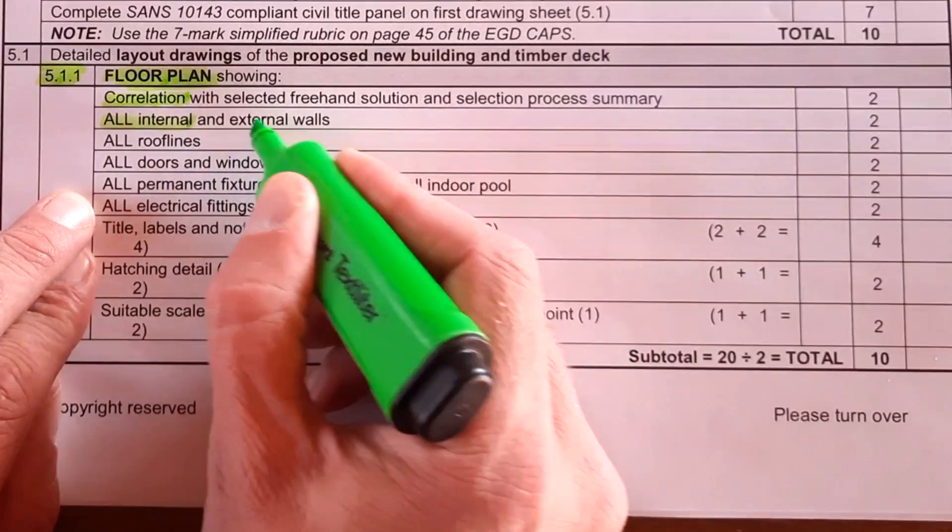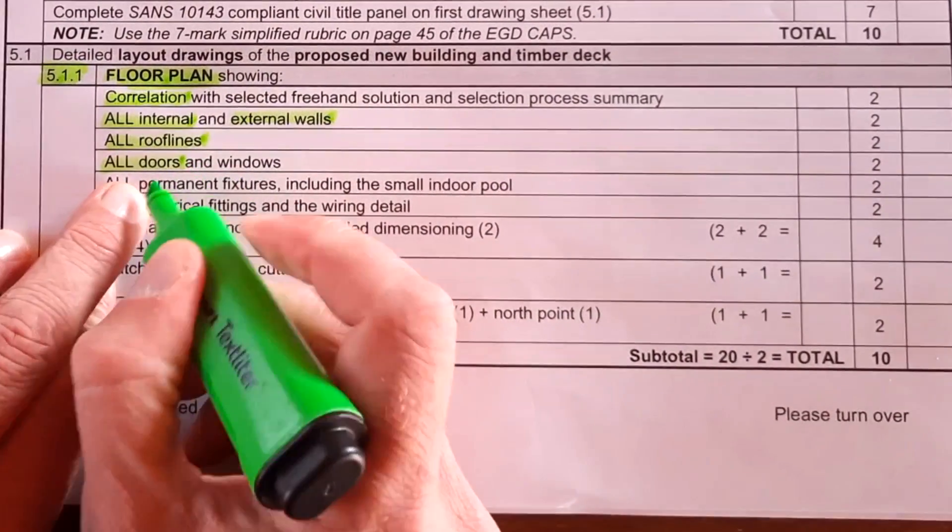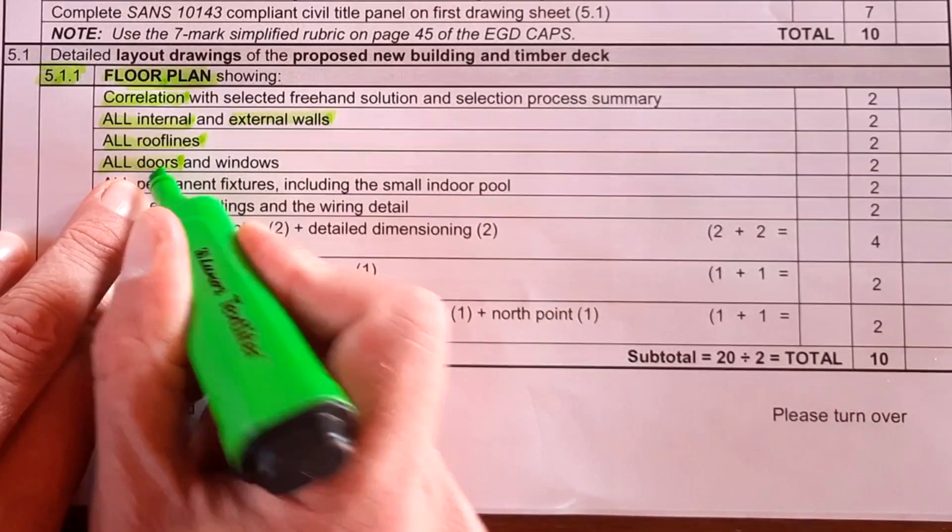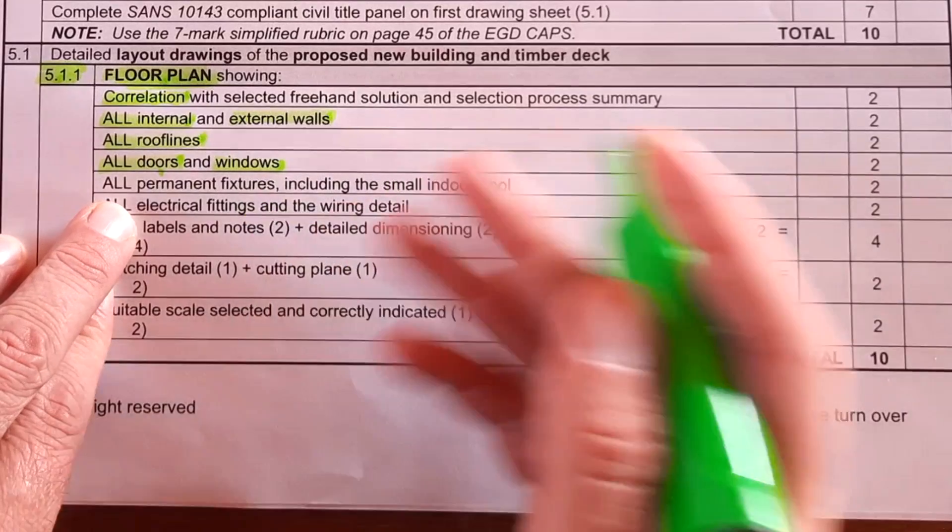Did you include all the internal and external walls? Is the roof lines visible? All doors, remember here goes the door frames as well. Windows, which include the window sills. All the permanent fixtures. I've made a list of that already.